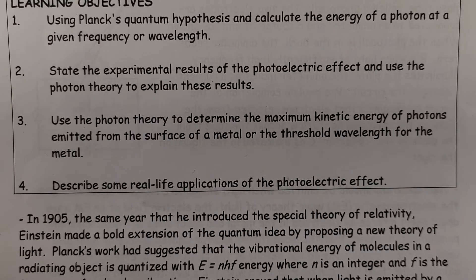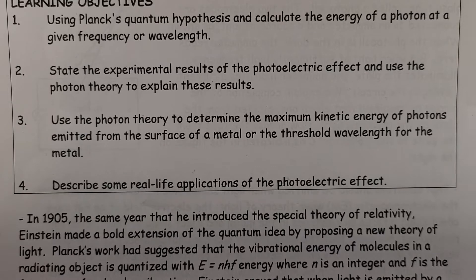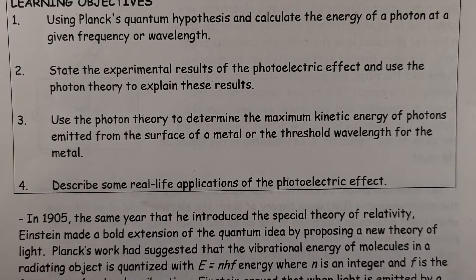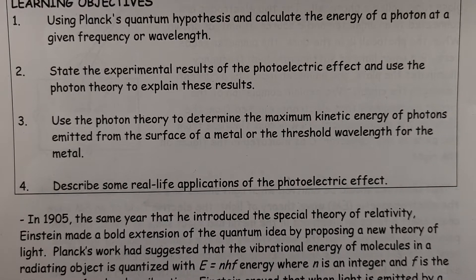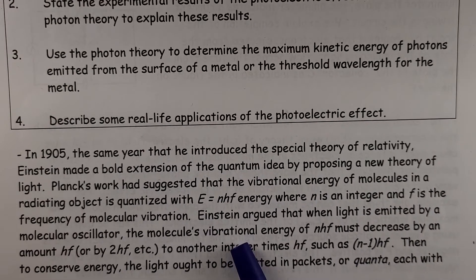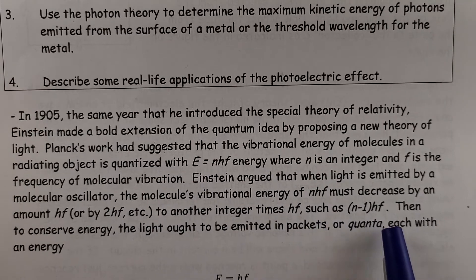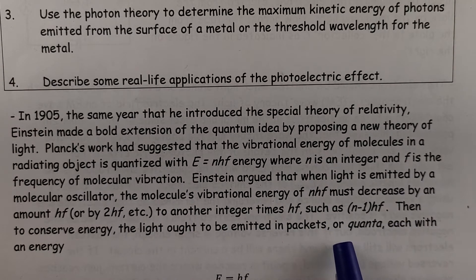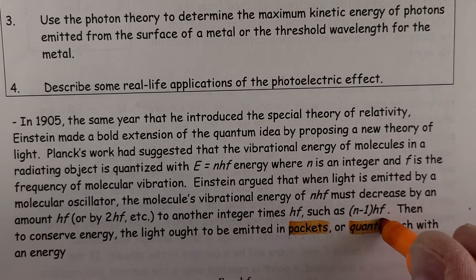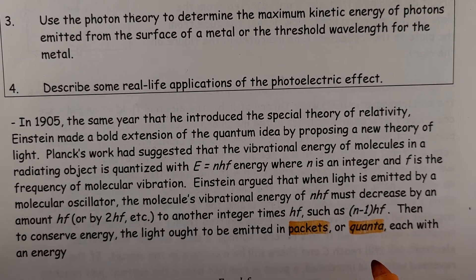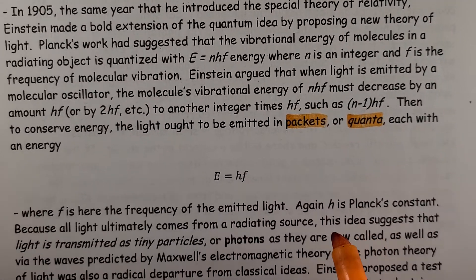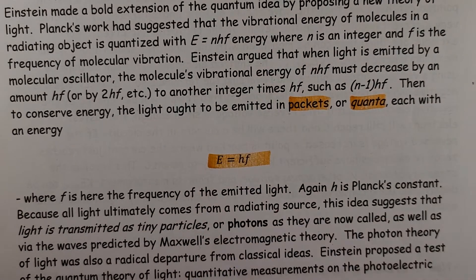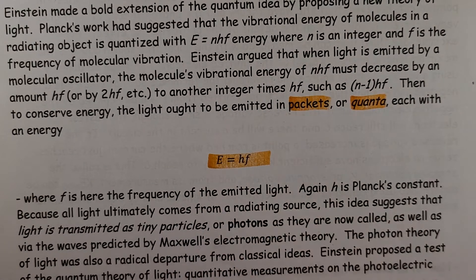Einstein argued that when light is emitted by a molecular oscillator, such as a light source, the molecule's vibrational energy, NHF, must decrease by an amount of HF, or by 2HF, etc., to another integer times HF, such as N-1. Then to conserve energy, the light ought to be emitted in packets, or sometimes referred to as quanta. So think of quanta as being made up of little bundles, with each having this energy E equals HF, with that being the minimum one.